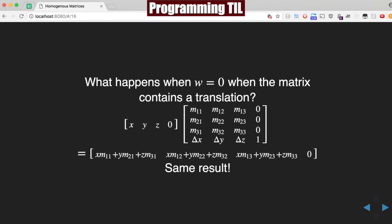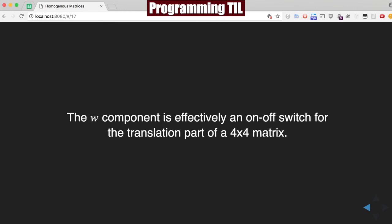What happens when there is a translation involved in the matrix, but the W is still 0? We get the exact same result. So what does that mean for W? It means W is basically a way to turn on and off the translation portion of a 4x4 matrix.